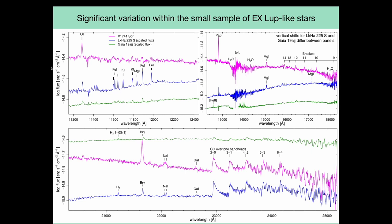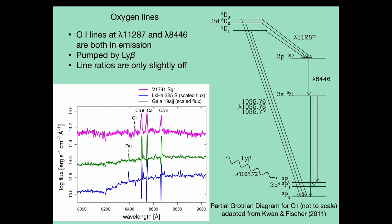I'd like to call your attention to this O I feature, which is quite prominent in the V1741 Sagittarius spectrum. The 11287 Å line is related to another line at 8446 Å. On the right, you can see a partial Grotrian diagram for neutral oxygen. There is a coincidence in energy levels where the separation between the ground state and the 3p triplet D state has an energy roughly equal to a Lyman beta photon. As a consequence, we'd expect this upper state to be populated by Lyman beta pumping, followed by a decay through sequential emission of an 11287 Å photon, an 8446 Å photon, then an ultraviolet 1303 Å photon. From this cascade, we'd expect equal numbers of 11287 and 8446 photons, which is roughly what we see for V1741 Sagittarius.